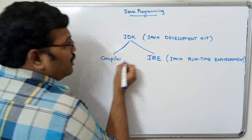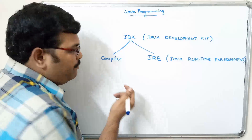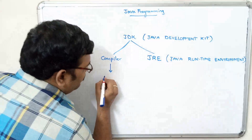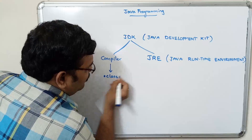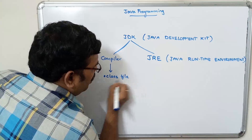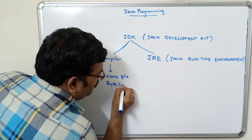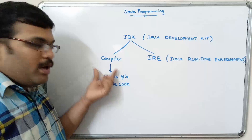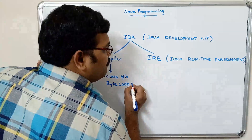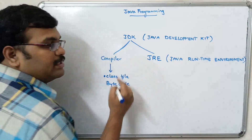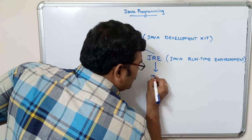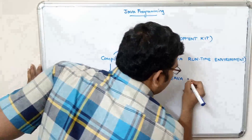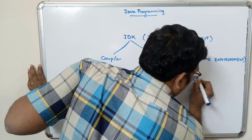After writing the program, this Java compiler will compile the Java program and it will produce a .class file, or we can call it bytecode. After compilation of the Java program we get this bytecode, and this bytecode will be given to JRE. JRE again consists of JVM, that is Java Virtual Machine.